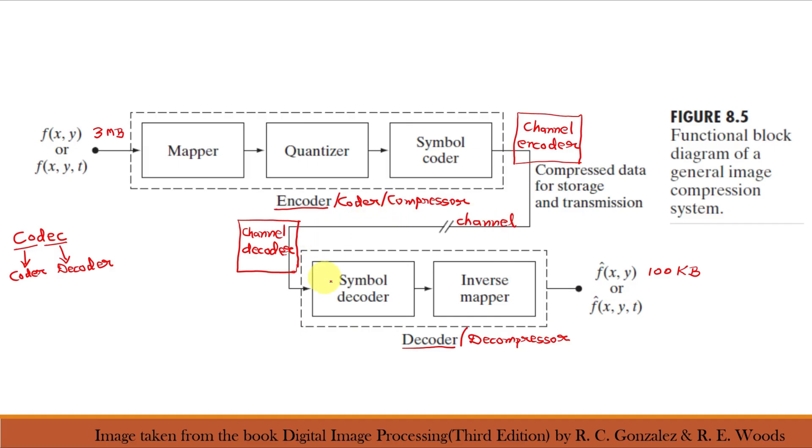The encoded representation is fed to the decoder where a reconstructed output image f cap(x,y) is generated. In general, f cap(x,y) may or may not be the exact replica of f(x,y). If it is the exact replica, the system is error free, lossless or information preserving.